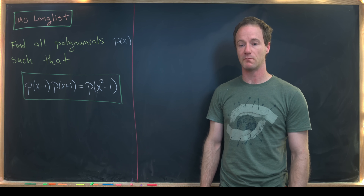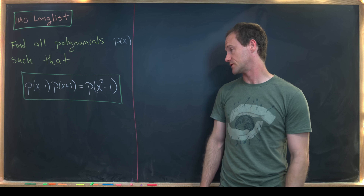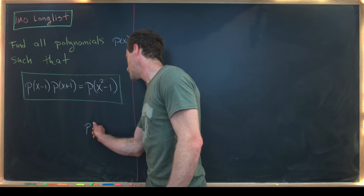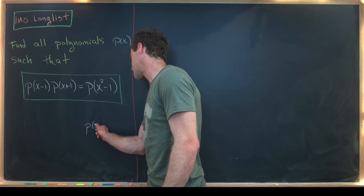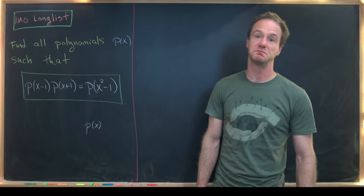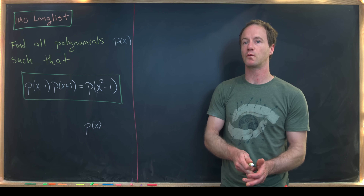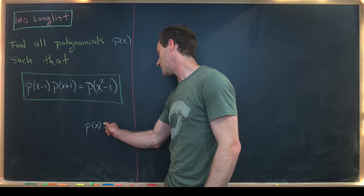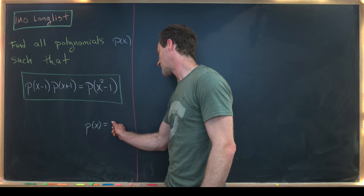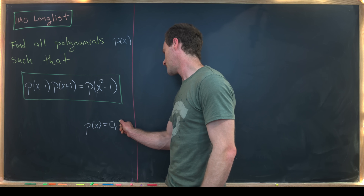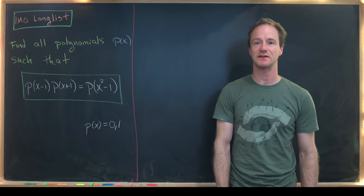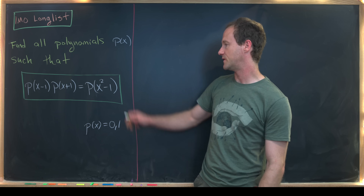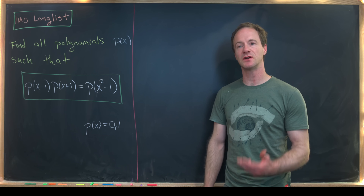Before looking for a more general solution, let's note two obvious solutions: p(x) = 0 (the zero polynomial) and p(x) = 1 (the constant polynomial 1). Both definitely satisfy the equation.